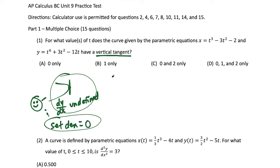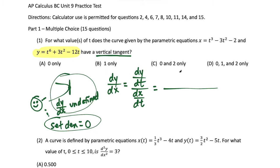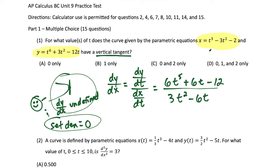So let's find dy/dx. In the parametric world, dy/dx equals dy/dt over dx/dt — you can see that dt over dt would cancel, bringing you right back to dy/dx. We take the derivative of the y equation with respect to time: in the numerator we get 6t to the fifth, plus 6t, minus 12. For the denominator, dx/dt gives us 3t squared minus 6t. The derivative of the constant minus 2 goes to zero.